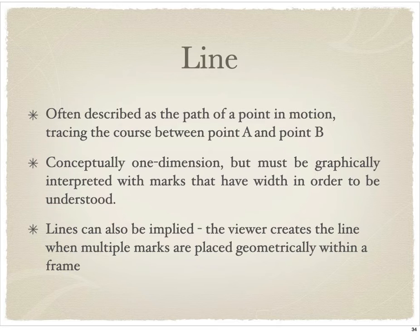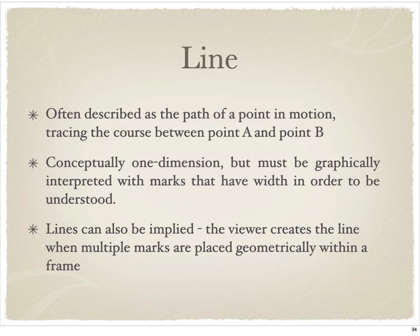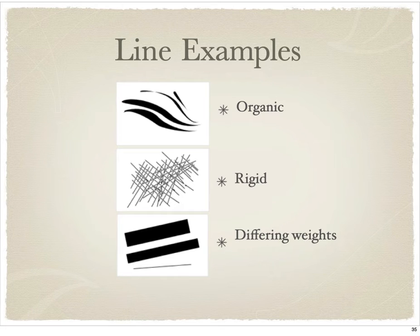Line can be one of the most important elements that can help you compose a wonderful shot. Line is described as a path from point A to point B — conceptually one-dimensional, but graphically interpreted with marks that have a width in order to be understood. Lines can be implied — the viewer can create lines when multiple marks are placed geometrically within the frame. Here are some examples of different line types you can come across: organic, rigid, and differing weights.